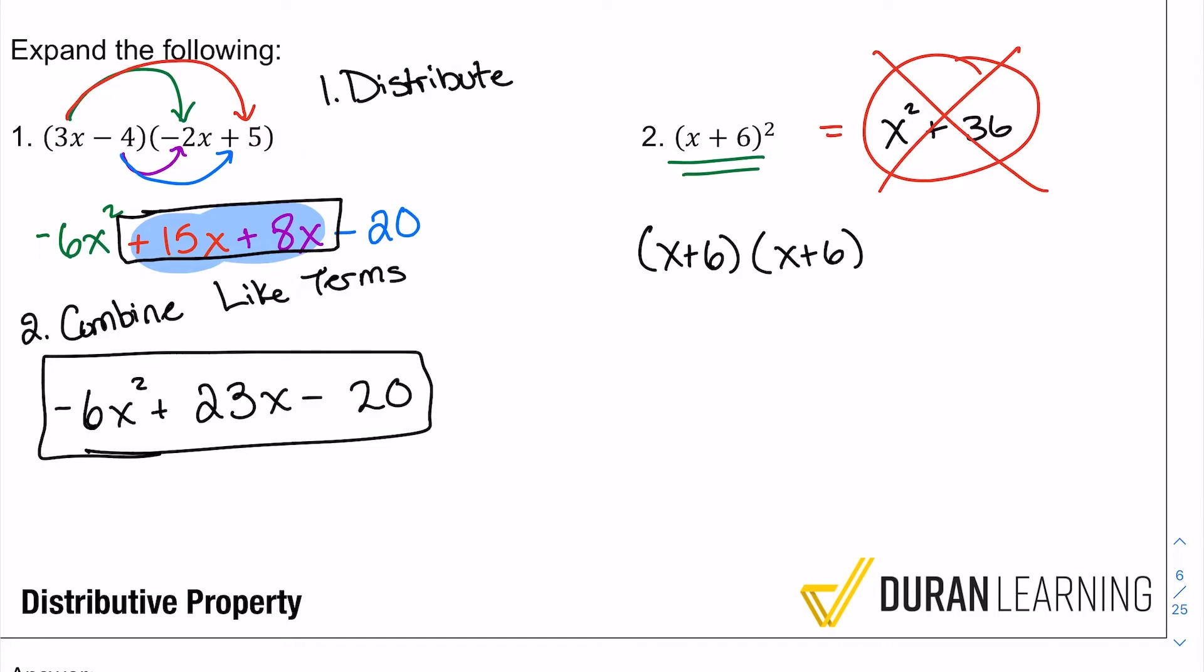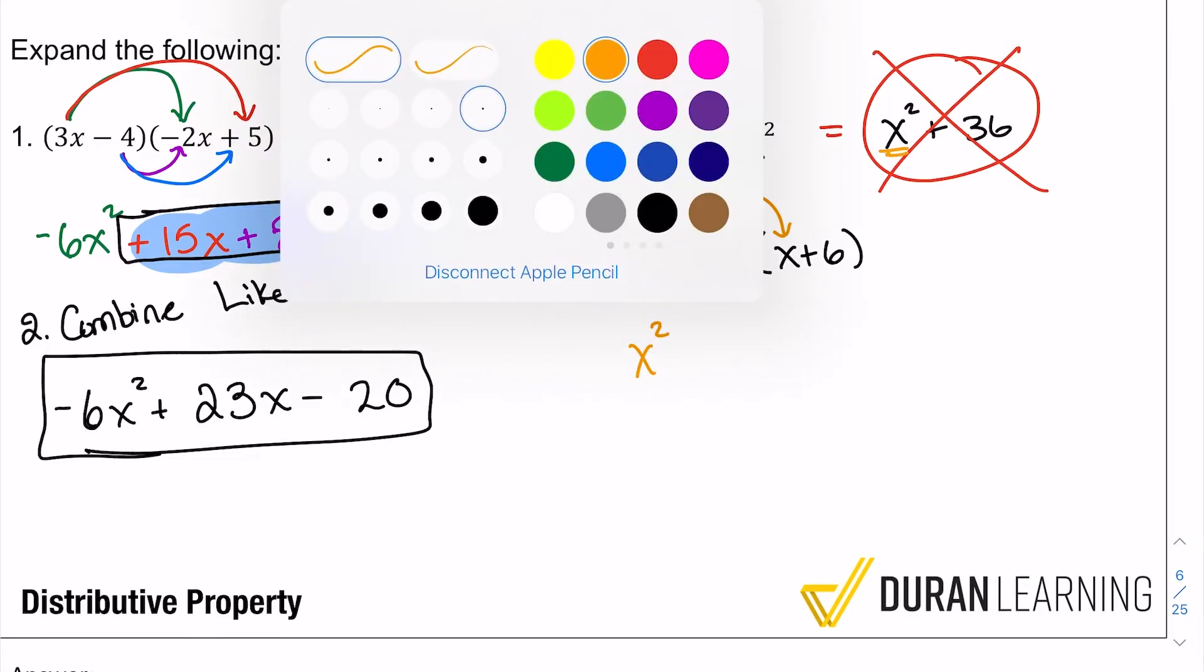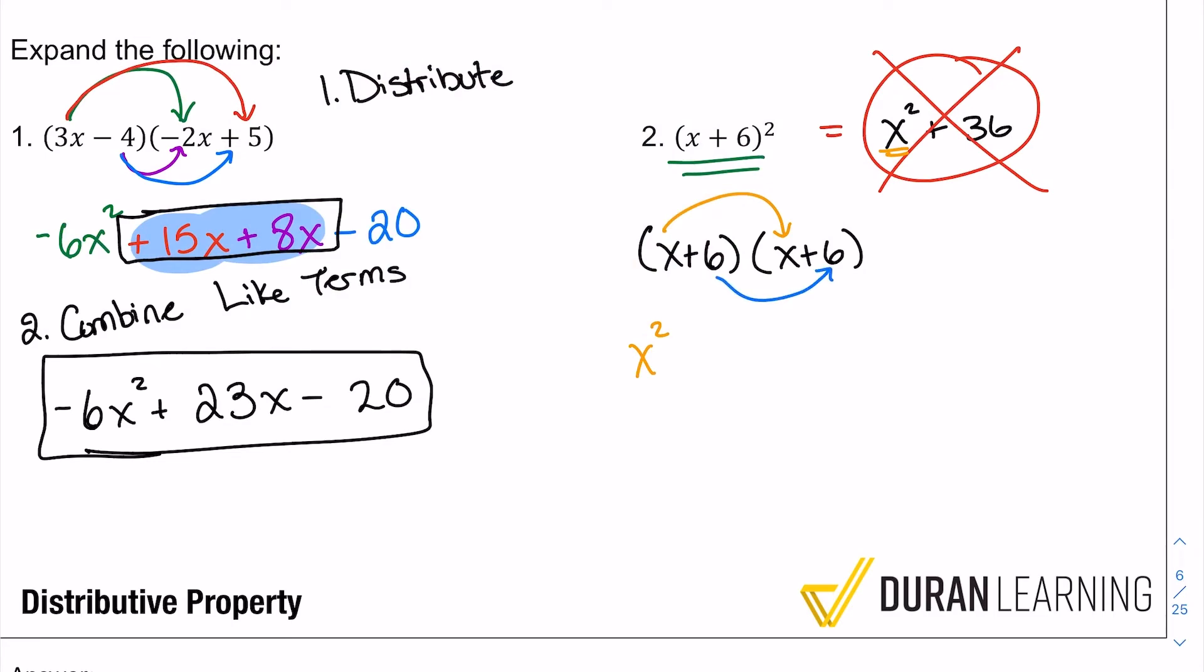First off, what we're going to see is x times x, and that is going to give us x². So that's partial of what we have. And also what you got to know is that at the end, the 6 and the 6 are going to multiply together as well, and that's going to give you that 36. So we have that part there, but it's everything in between that we miss if we don't follow the distributive property.